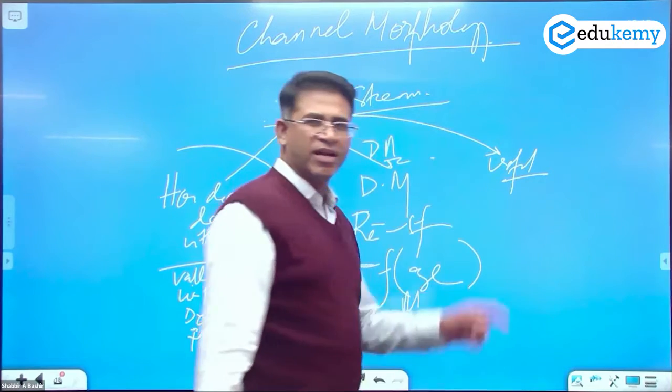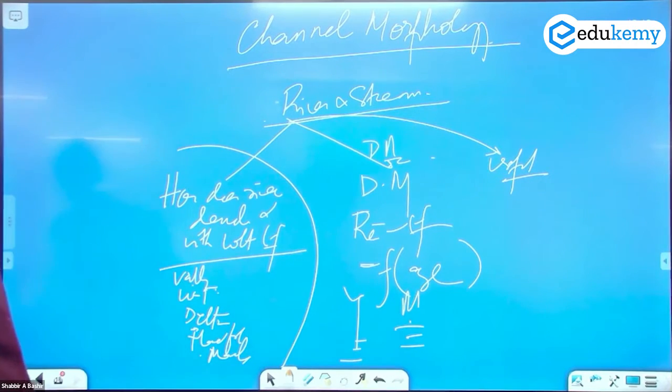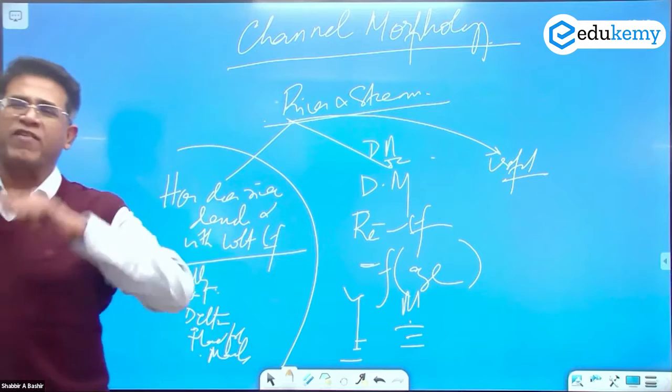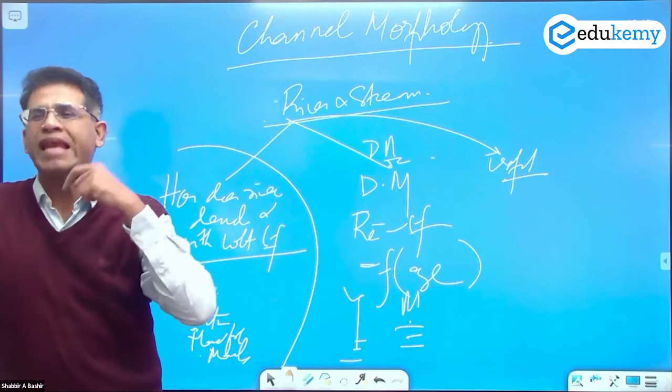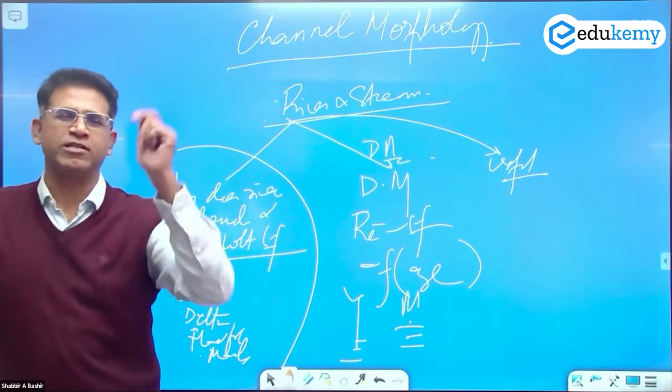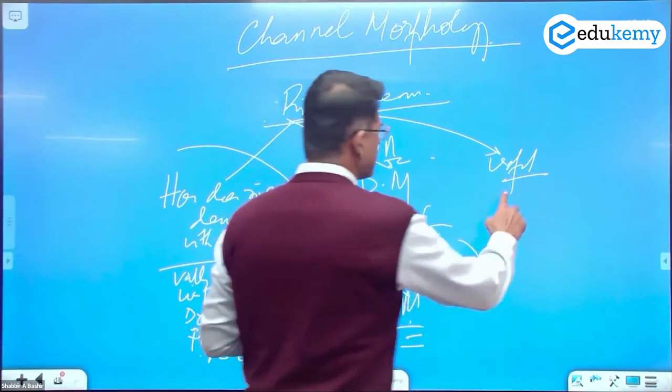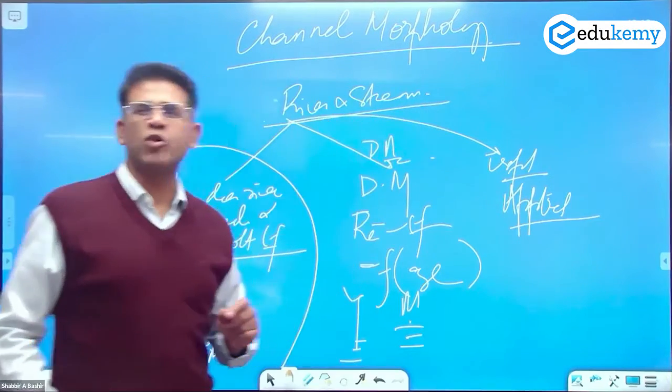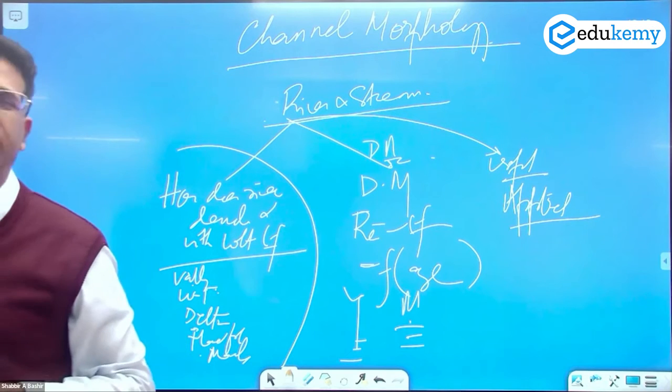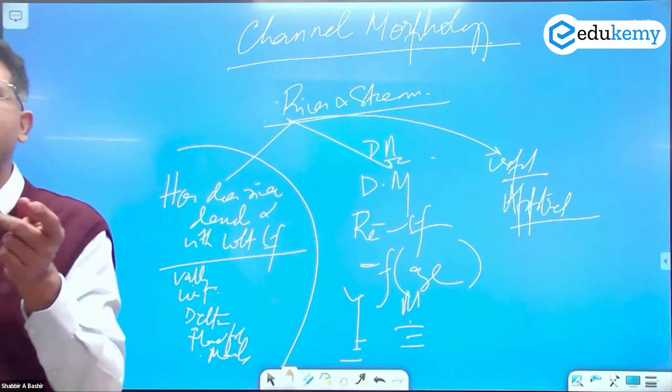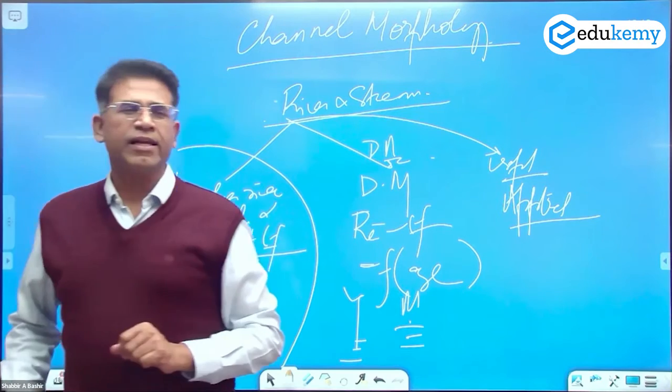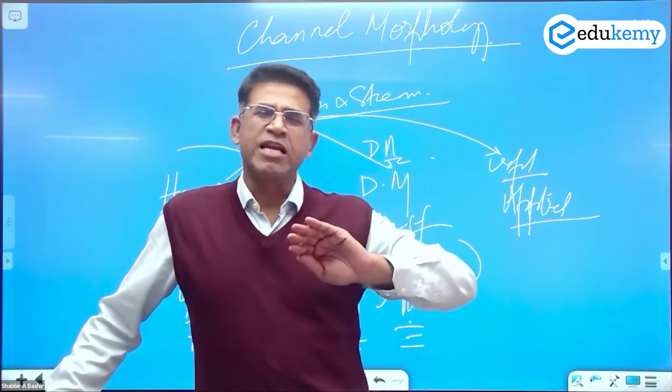A third type of approach is how are rivers useful to us? River irrigation, river power generation, river floods and floods management, rivers and urban development, maybe navigation and transportation. This is your applied aspect - rivers as the basis of planning and development. When I develop an area, let us plan the area according to the river.